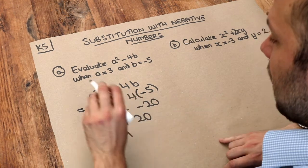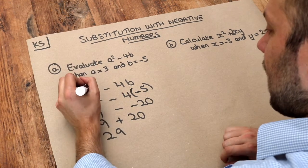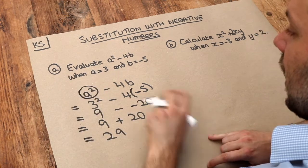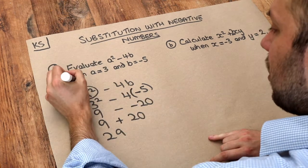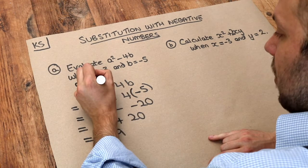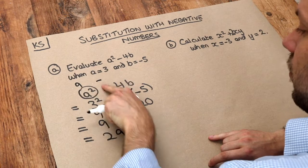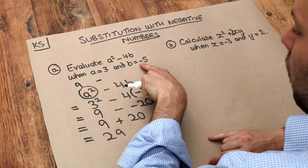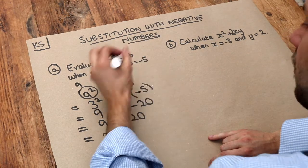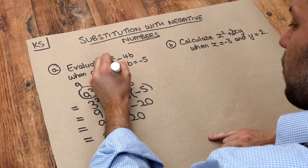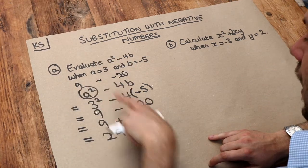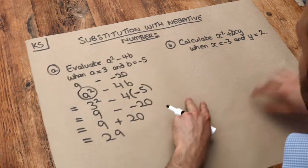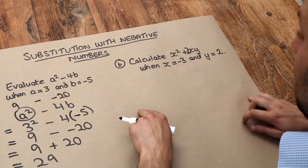I prefer to try and do it in my head if I can. So I work out A squared which is 9, put the minus symbol in the middle, and then 4B — well, 4 times minus 5 is minus 20 — going straight to that line rather than writing the line before. But it's up to you.